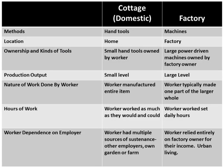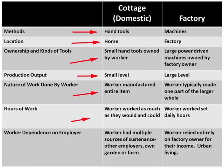Let's compare and contrast the cottage or domestic industry with that of the factories. In the cottage industry, workers usually used hand tools, worked from home, and owned their own tools. Their production output was usually very small. The worker manufactured the entire item, worked as much as they wanted, and more often than not had multiple sources of sustenance — other employers, their own garden, or their own farm.